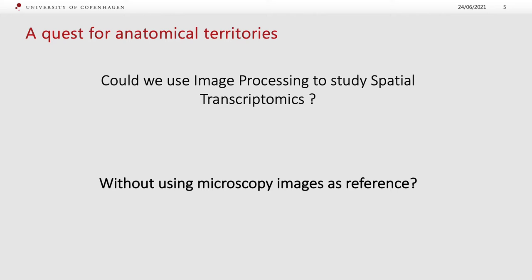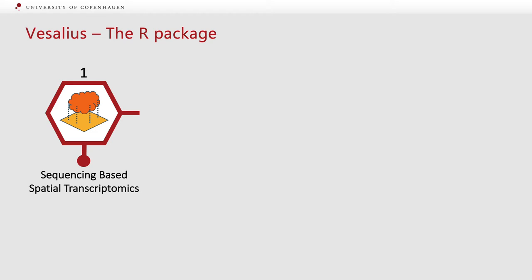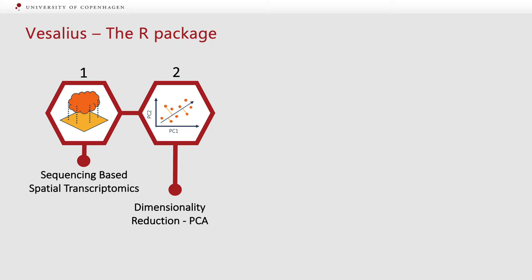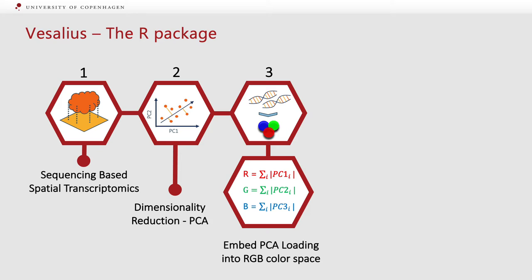Undeterred by these challenges, we developed the Vesalius algorithm. Vesalius is available as an R package. It requires sequencing-based spatial transcriptomic data. Once the count matrices have been normalized, scaled, and variable features have been extracted, we can reduce the dimensionality of the data using principal component analysis. In this context, PCA provides us with loading values — essentially the variance associated to each gene within each principal component. We can use these loading values to embed them into the RGB color space.